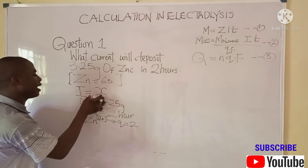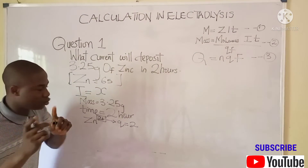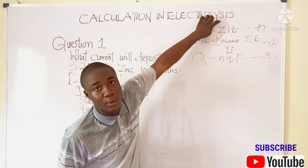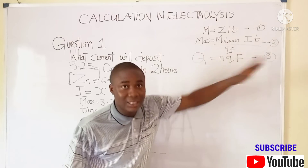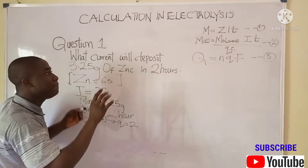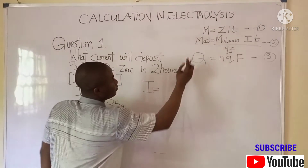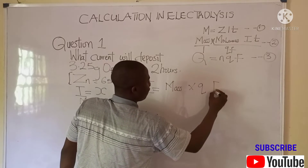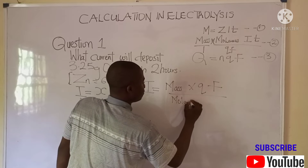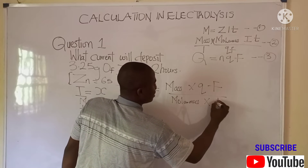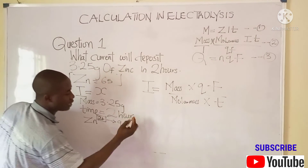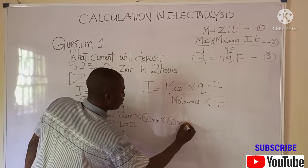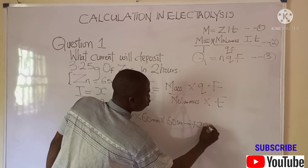We use Formula 2 because it contains i, and the electrochemical equivalent is not given so Formula 1 cannot be used. Making i the subject of Formula 2: i = mass × qF / (molar mass × t). Converting time: 2 hours × 60 × 60 = 7,200 seconds.